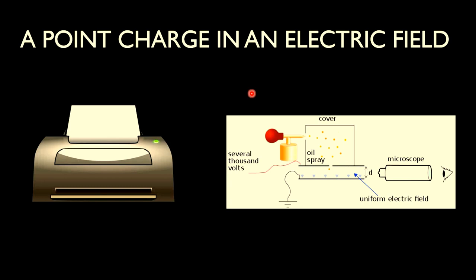The point charge in an electric field is given by the formula F bar is equal to Q E bar. Now this formula is a rearrangement of the previous formula that we saw, only Q0 is substituted by Q.